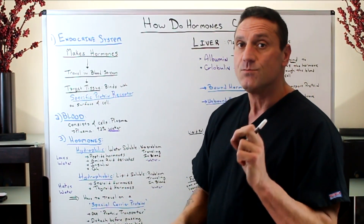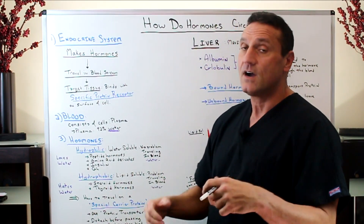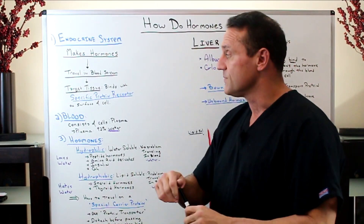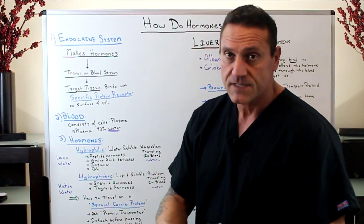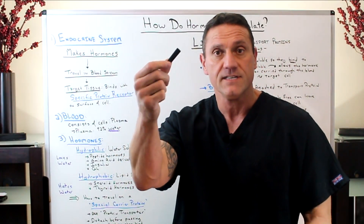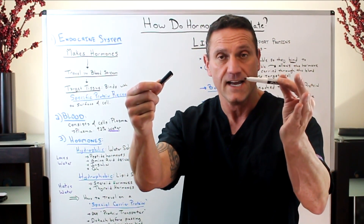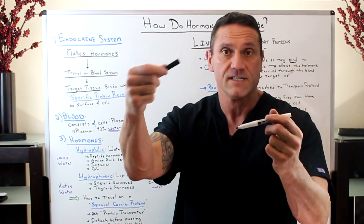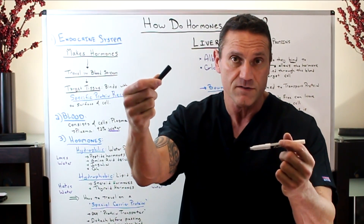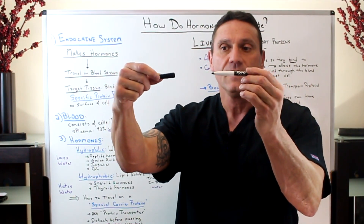What happens is the hormone binds with a specific receptor — a protein receptor on the surface of the cell, much like a pen cap. This is a black pen cap; it attaches onto a special carrier protein. Here's the receptor.